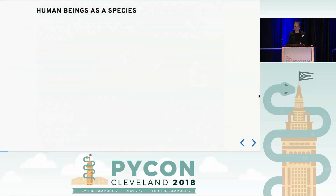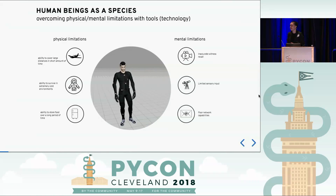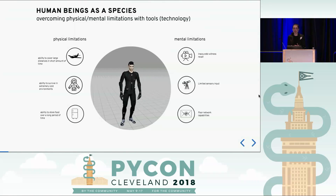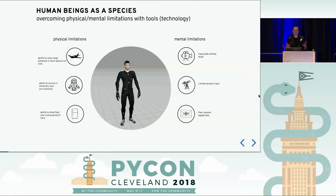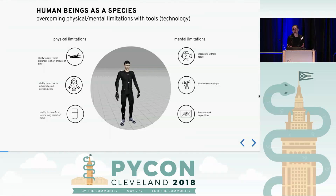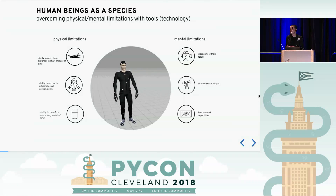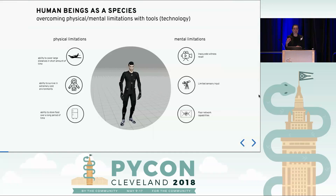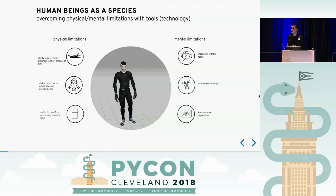Let me start with us as human beings. We as human beings are pretty awesome. We're very dexterous with our hands. We have really fantastic mental capabilities, but we do have some challenges for the physical and mental environment. For example, our eyes. Our eyes cannot see that far or very close. So what do we do as humans?